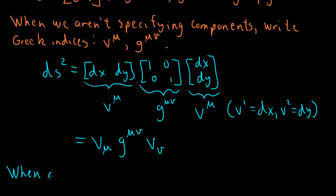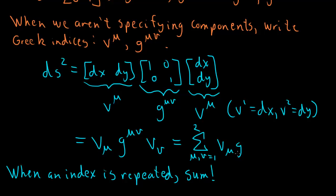So when an index is repeated, when this mu or nu is repeated, this means it's actually a sum. So this means that we're going to add up, if you're familiar with the sigma notation. So we add up when mu and nu equals 1 to 2, V mu, G mu nu, V nu.